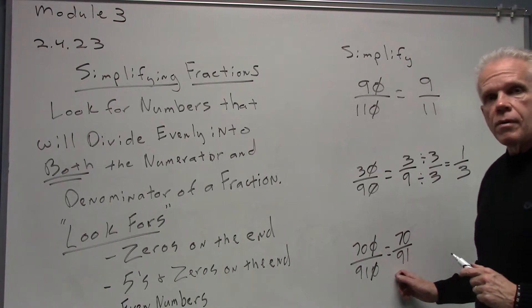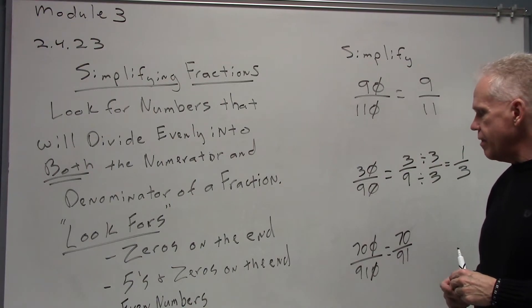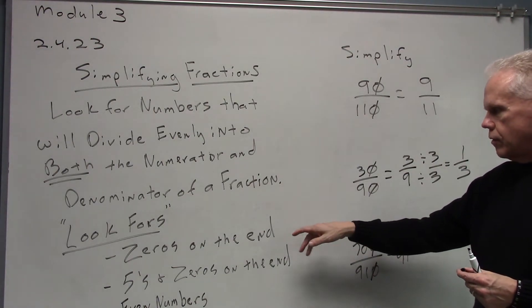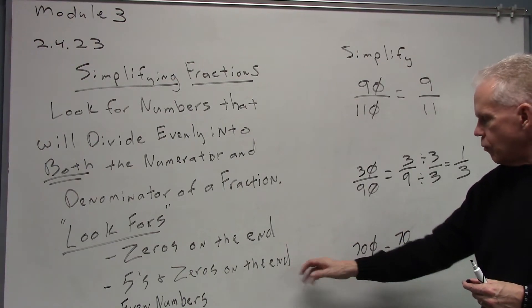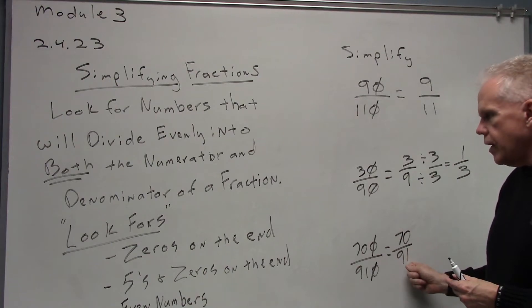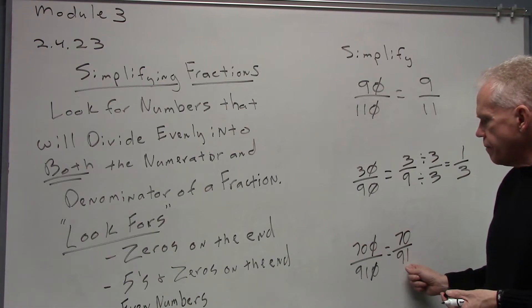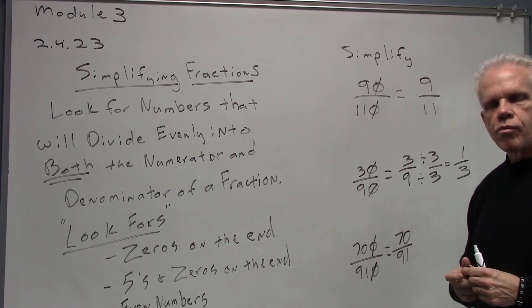Now, I'm looking for something that will go into 70 that will also go into 91. That's a challenge. I'm going to go through my look-fors. I've already done the zeros on the end. One of these numbers still ends in a zero, but the other one does not end in a 5, so I can't use 5. This one's even, but this one's not.